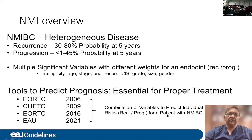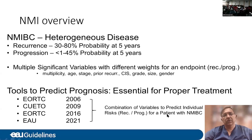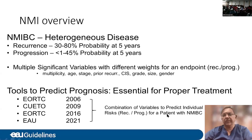Over the years we had various prognostic tools in the form of EORTC risk calculators originally defined in 2006, subsequently the Kyoto model in 2009, then the EORTC 2016, and very recently the EAU prognostic indicator 2021. I'm going to quickly describe to you some of the salient features of these nomograms.